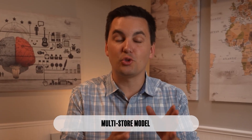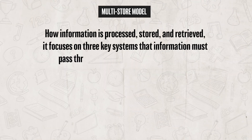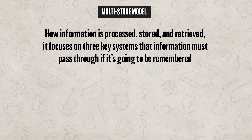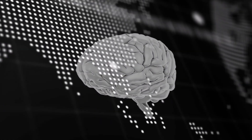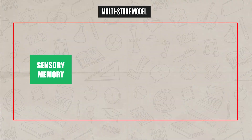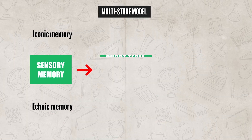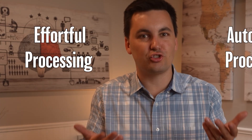And this is where the multi-store model comes in. The multi-store model explains how information is processed, stored, and retrieved. It focuses on three key systems that information must pass through if it's going to be remembered. According to this model, memory isn't just one big system — it's actually three interacting ones: sensory memory, including iconic and echoic memory; short-term memory; and long-term memory. Together, these systems explain how information must be encoded, stored, and retrieved, and how both automatic processing and effortful processing play a role in what we actually remember.